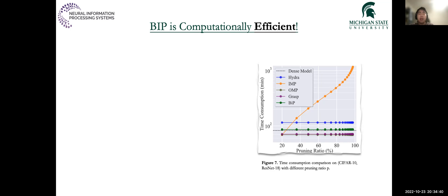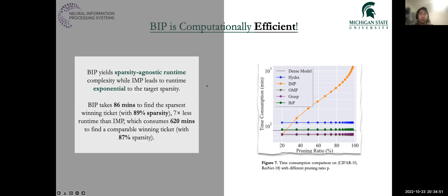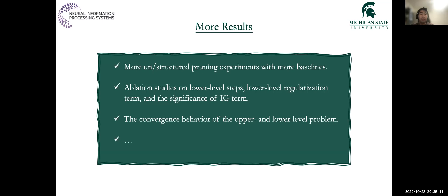Next, we show the high efficiency of BIP compared to state-of-the-art IMP. As we had hoped for, BIP consumes sparsity-agnostic time, just like one-shot pruning methods. In this case study with CIFAR-10 on ResNet-18, BIP is seven times faster than IMP when comparing the time consumption used to find the corresponding sparsest winning tickets, while finding sparser winning tickets with much less time.